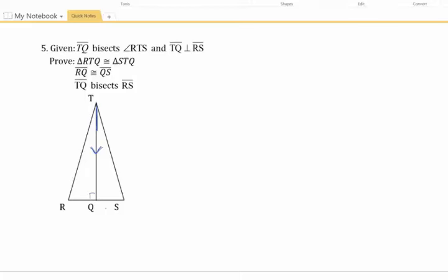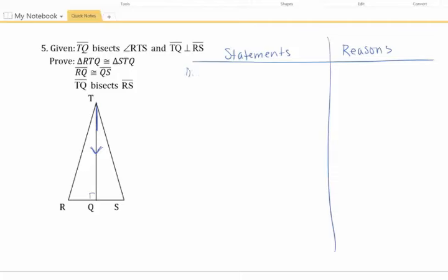So we're just going to go at it and see what we have here. I'm going to start with my statements and reasons, and then I'm going to write my givens back down: TQ bisects angle RTS, and TQ is perpendicular to RS, and those things were given to us.